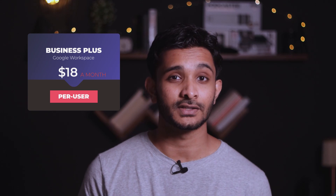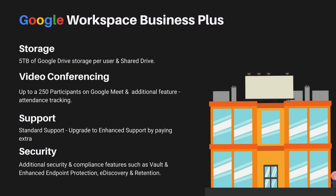The Business Plus plan at $18 a month per user gives you a massive 5 terabytes of storage and up to 250 participants for Google Meet, with recordings and the ability to track attendance. You also get vault features such as eDiscovery and retention. eDiscovery helps you find information in an electronic format, which is of immense help during legal proceedings or investigations. Retention allows you to preserve data so that even if data is deleted by the user, it's still available for review. You also get secure LDAP to connect LDAP-based applications to Google Workspace, plus advanced endpoint management features.